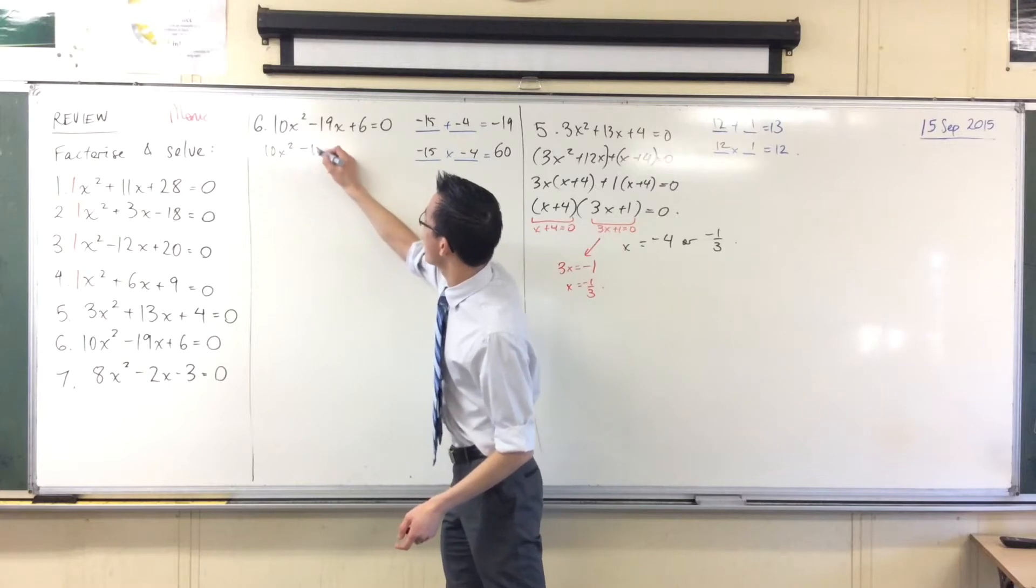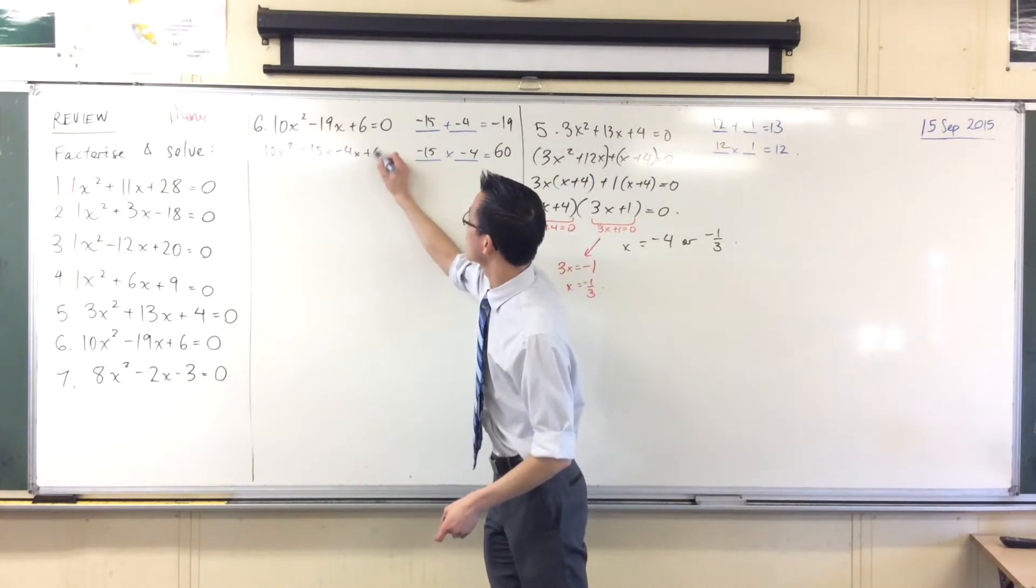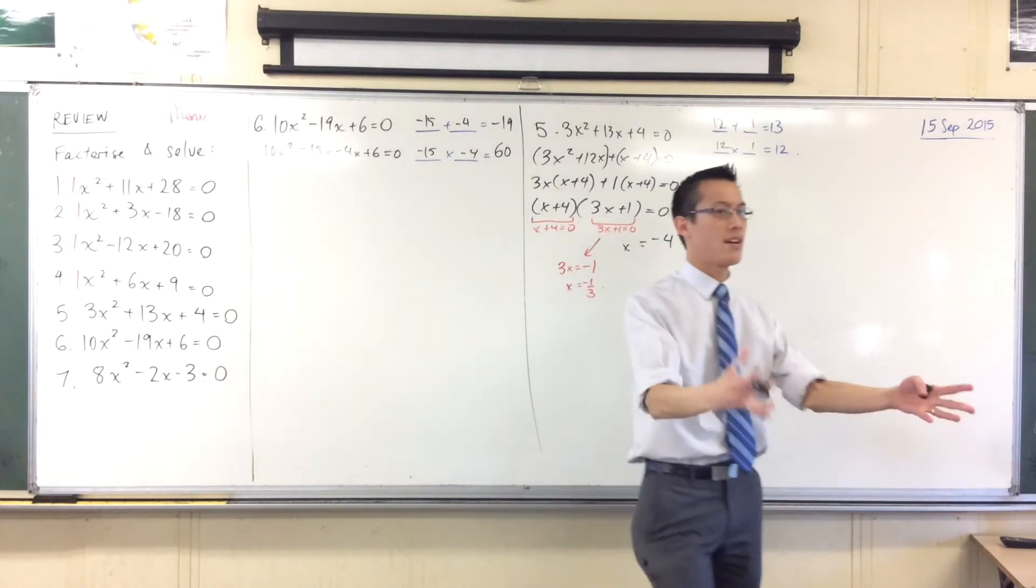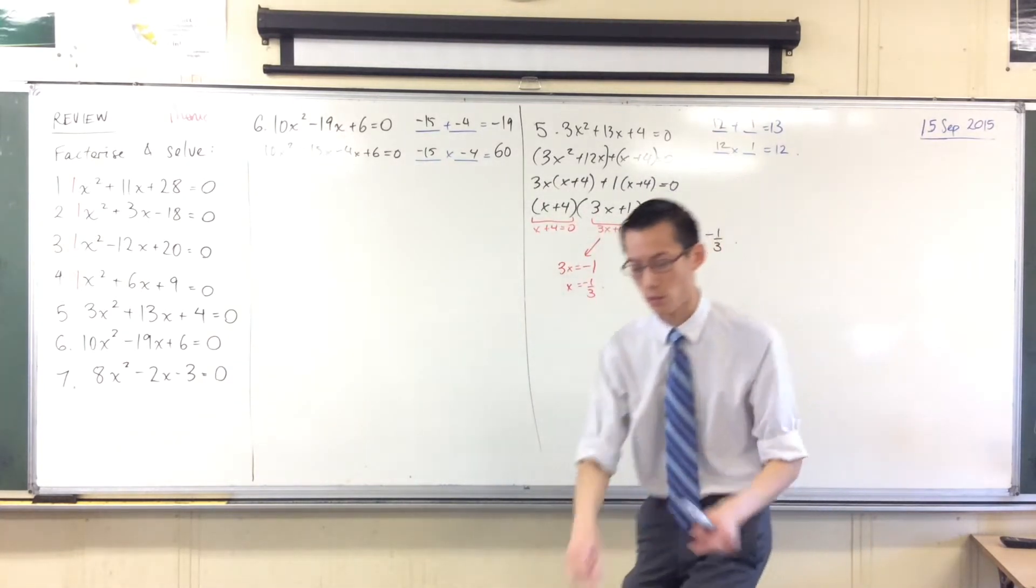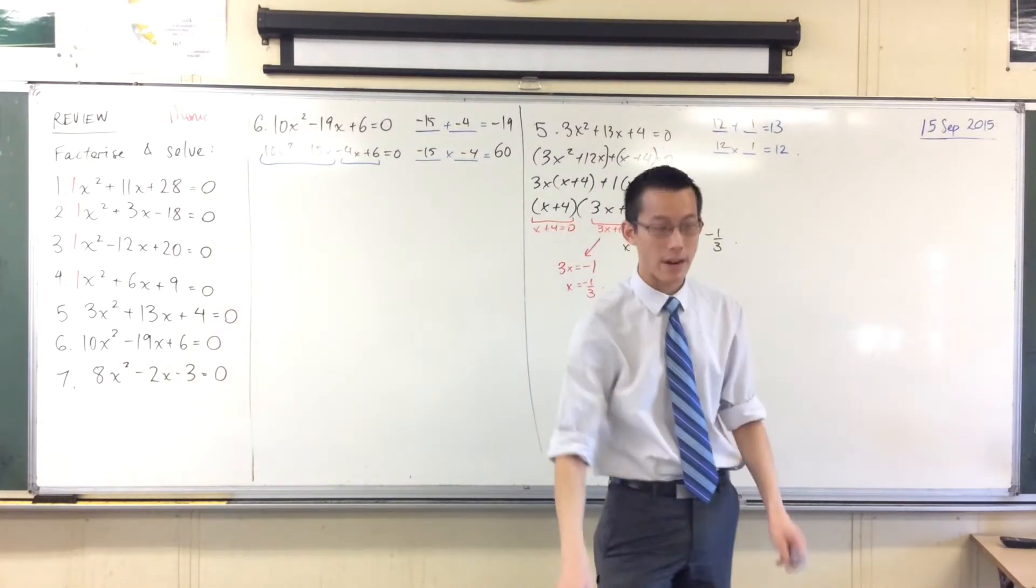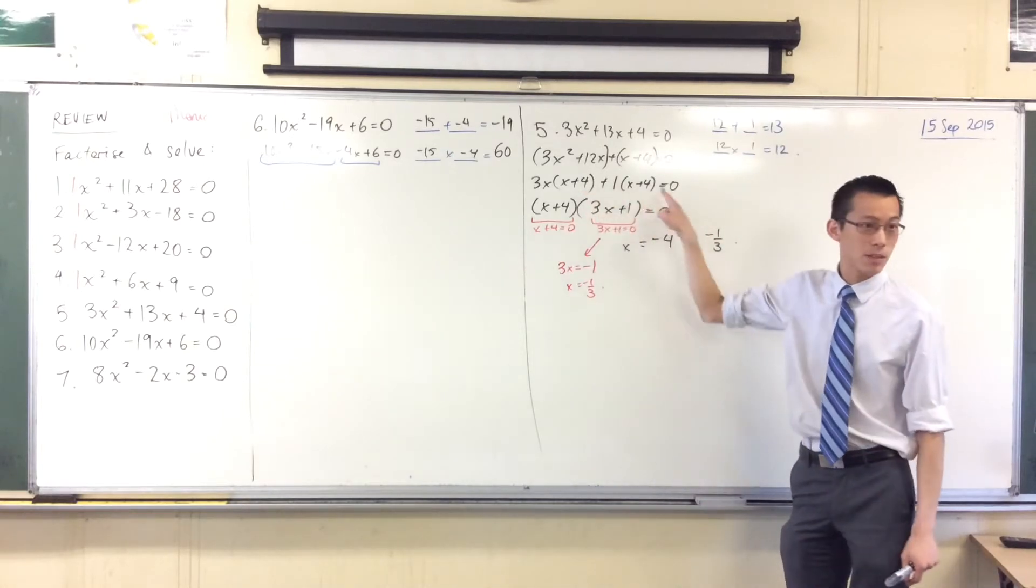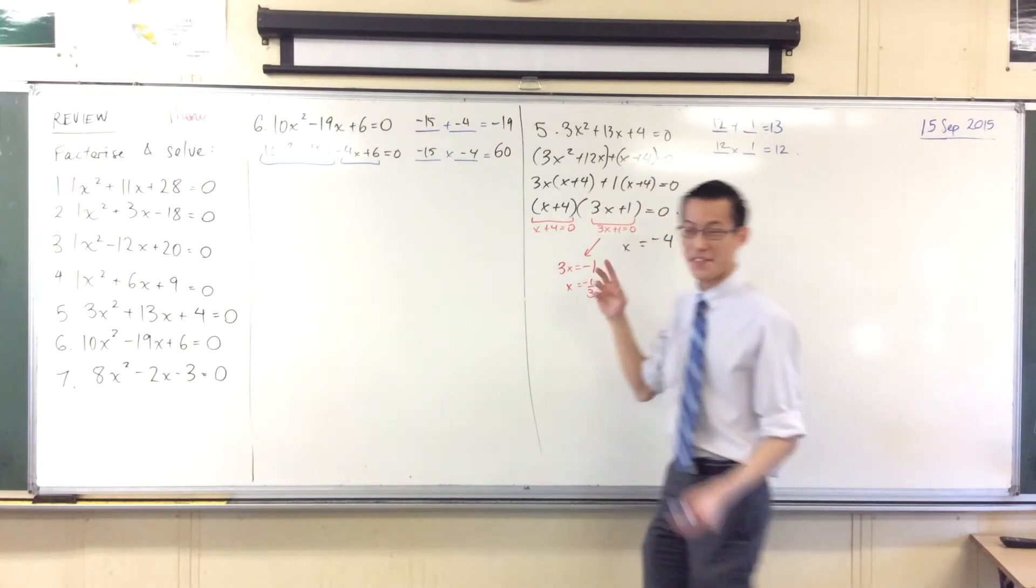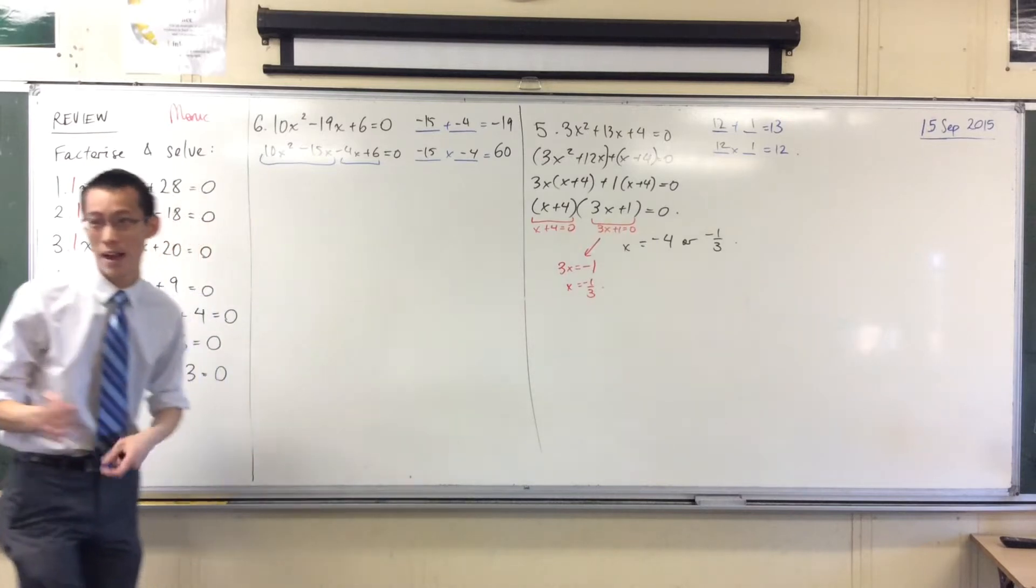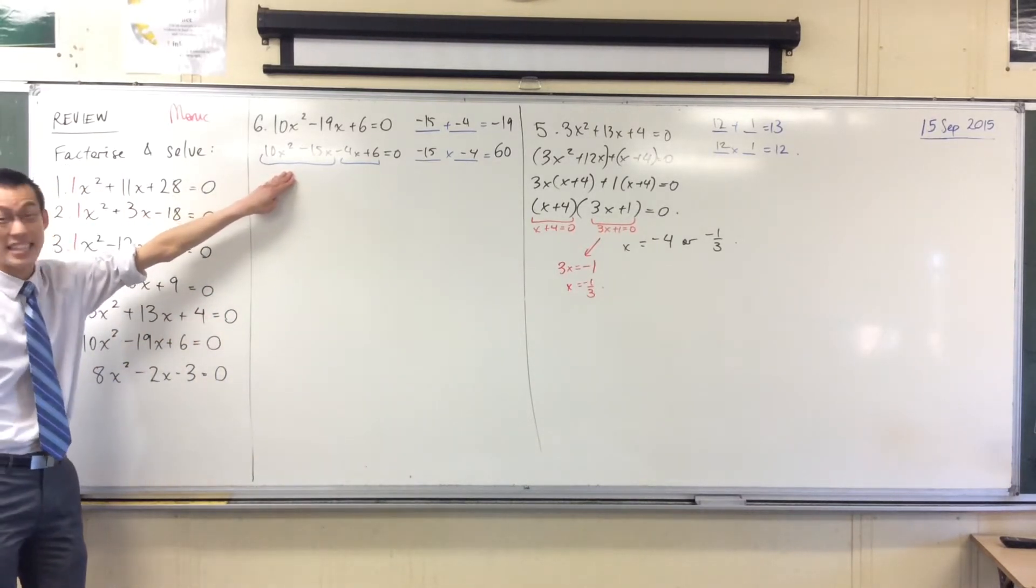So let's write this out. I'm going to break apart that minus 19x now. There's my minus 4x plus 6, and now is the moment of truth. I'm going to look at those two pairs, 1, 2, and when I take out whatever factor I can from there, I want the same thing happening for both of them, like this x plus 4 that we got before. If I get the same thing, then I know I'm on the right track. What can I take out of the first pair?